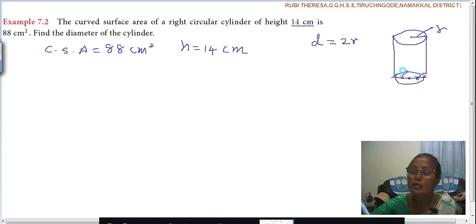Here on R, here on R. Twice radius. Diameter is twice radius. First you should know the formula for the curved surface area of a cylinder. What is it? 2 pi R into H.